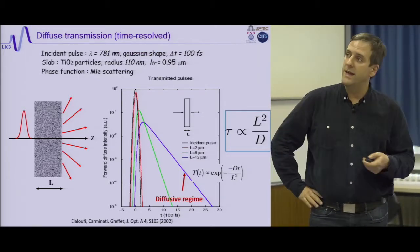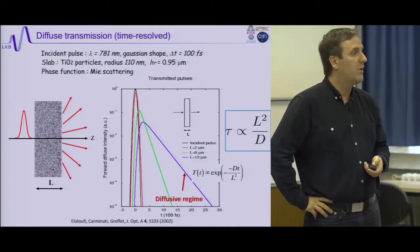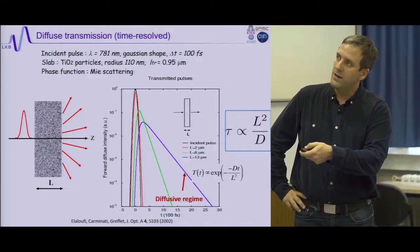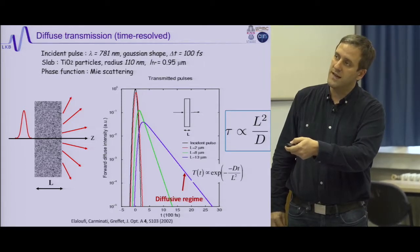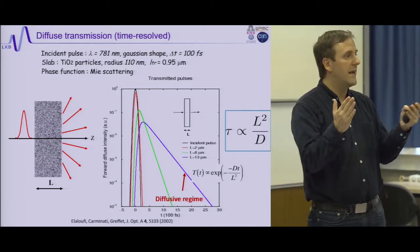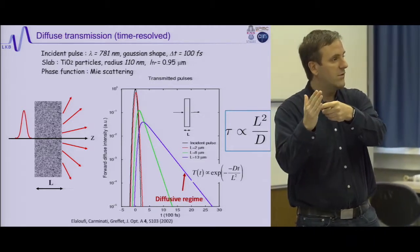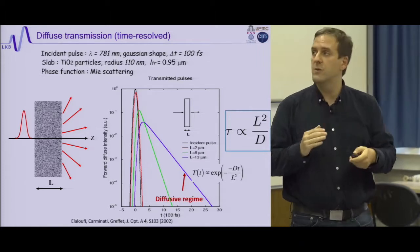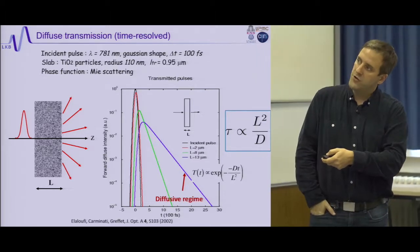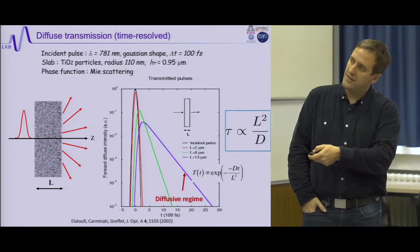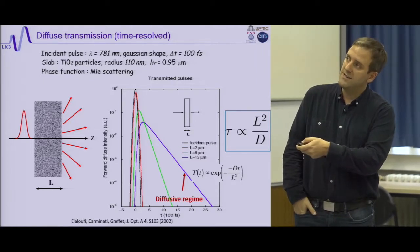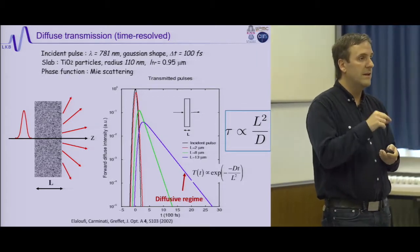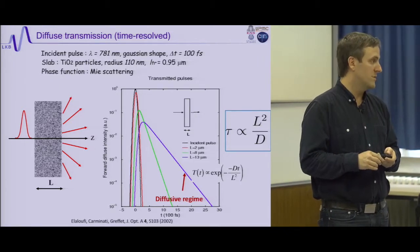It is also interesting to look in the time domain. If I send a very short pulse of light inside a medium, because of the random walk statistics, the light reaching the other side has a distribution of paths. Some light travels very long paths before exiting. The light that comes out is broadened in time, and if you double the thickness, this time quadruples — which you can understand completely in terms of random walks: to go twice as far, you need four times more steps.